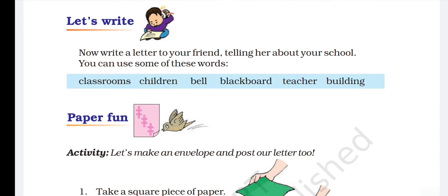Now, next exercise, let's write. Write a letter to your friend telling her about your school. You can use some of these words. Here are some words given in blue box. You have to select these words and you have to write a letter. How you have to start? First of all, you will write your address, then date, then dear friend. After that, you have to write the body of the letter by using the given words.